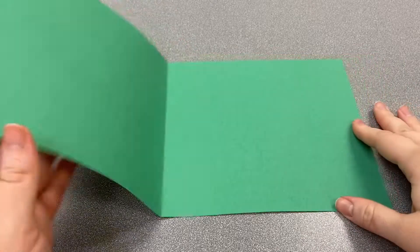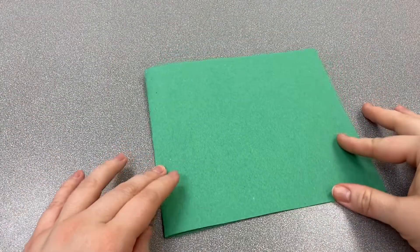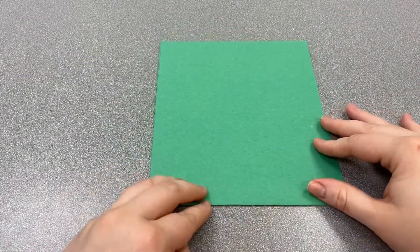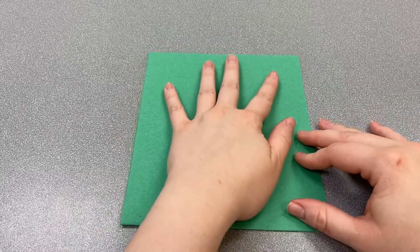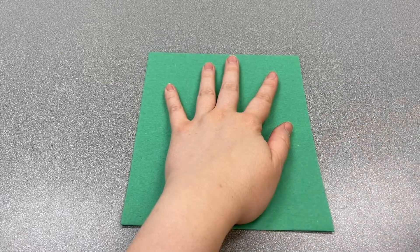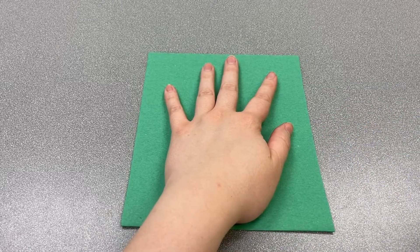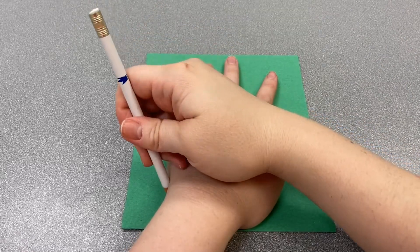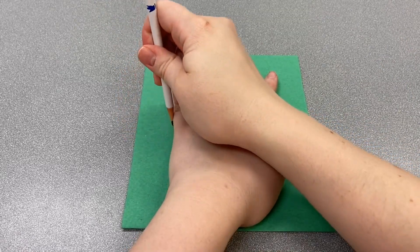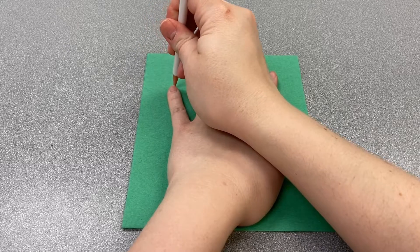First we're going to get our green sheet of construction paper and fold it in half. Then you're going to put the fold at the bottom and put your hands on it with your palm facing the fold and take your pencil and start carefully tracing around your hand and fingers.